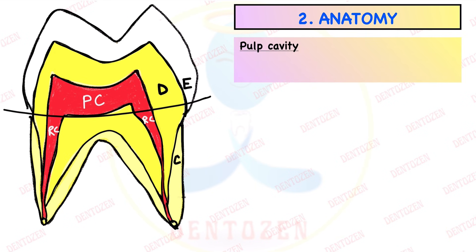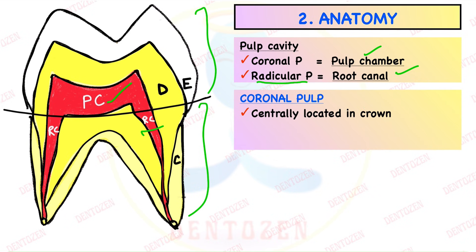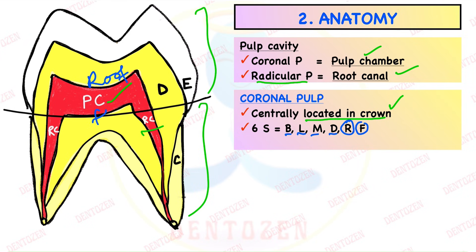Anatomy of the pulp: pulp cavity is the space occupied by pulp. Pulp is divided into two parts. Pulp in the crown is called coronal pulp, also known as pulp chamber. Pulp in the root is called radicular pulp, also known as root canal. Coronal pulp is centrally located in the crown and has six surfaces — buccal, lingual, mesial, distal, and also a roof and a floor. The extensions projecting into the cusps are known as pulp horns.